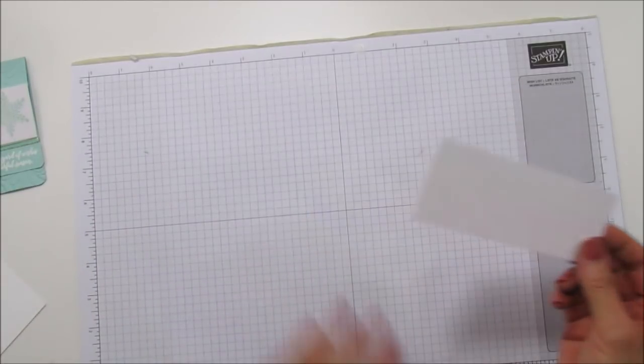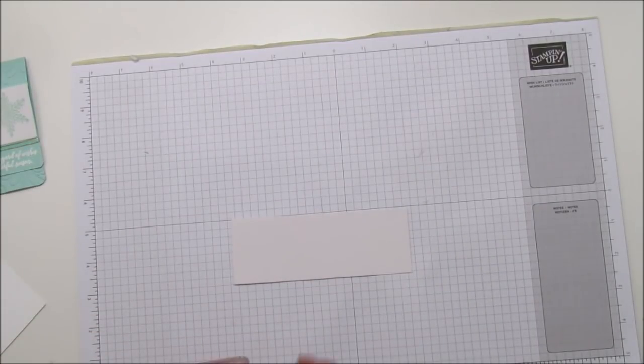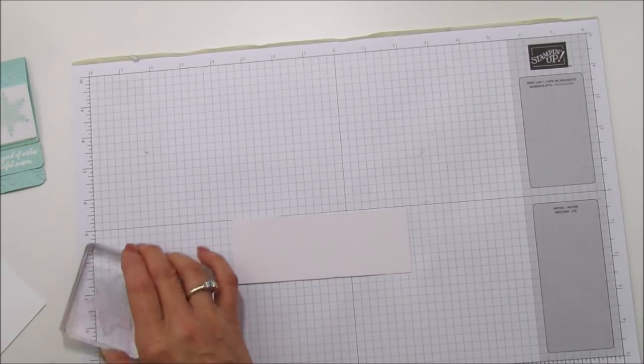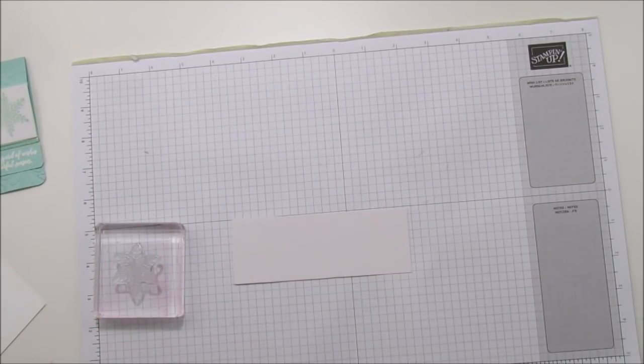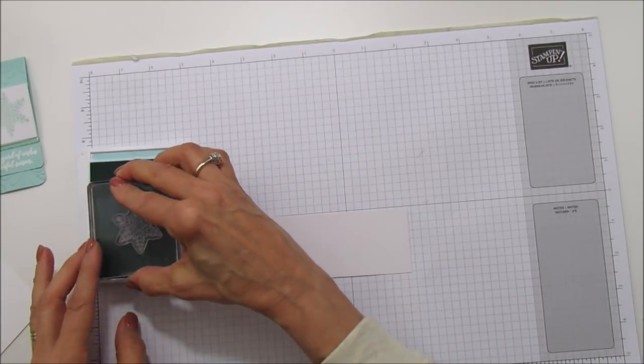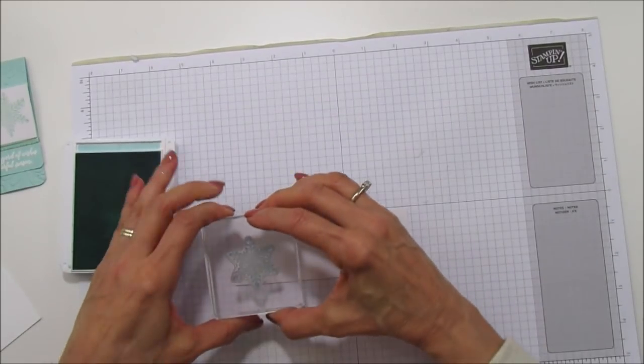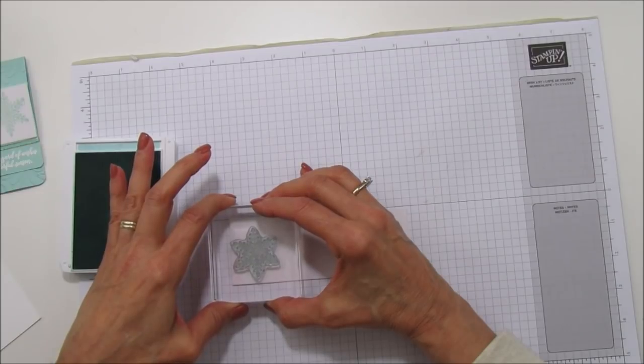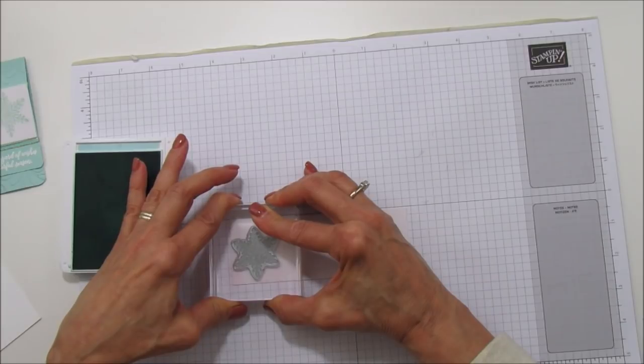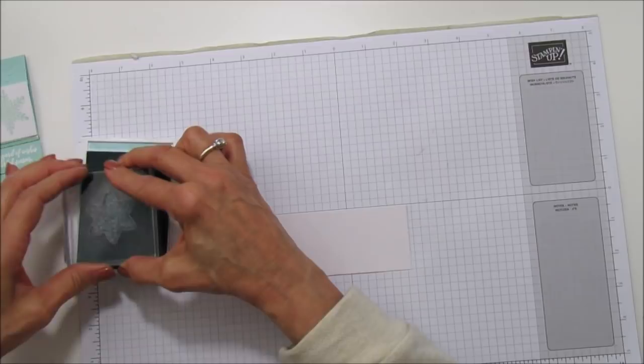So here's my piece of velvet. Hopefully I'm going to keep these straight because I always stand up. It's a bad habit but I always stand up usually when I'm stamping. And we're using Pool Party. Ink it up really good and then just start stamping in the center. And I hold it there for a minute so it absorbs the ink a little bit more. Look how gorgeous it stamps on here.